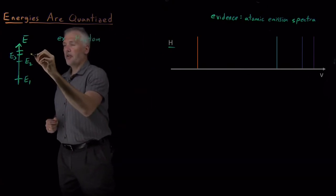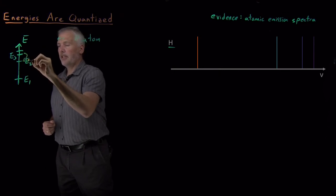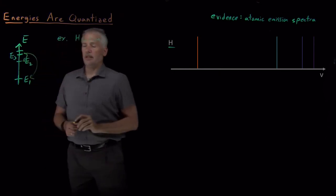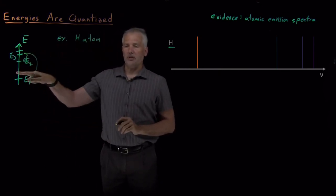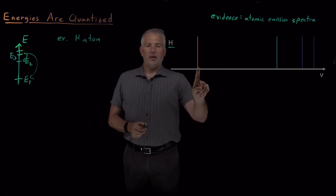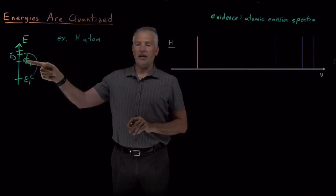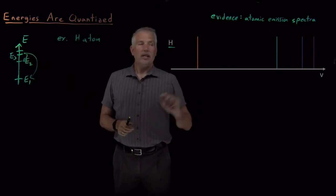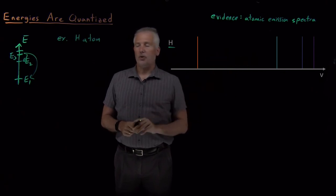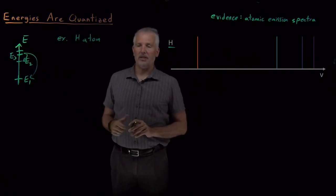That's because when a hydrogen is in this state, it can only fall, let's say, to this state or to this state. It can't fall anywhere in between because there's no level there to accept it. For example, this reddish photon is emitted when hydrogen falls from its third state down to its second state. Each one of these different photons corresponds to a different individual transition between discrete quantized states of the hydrogen atom.